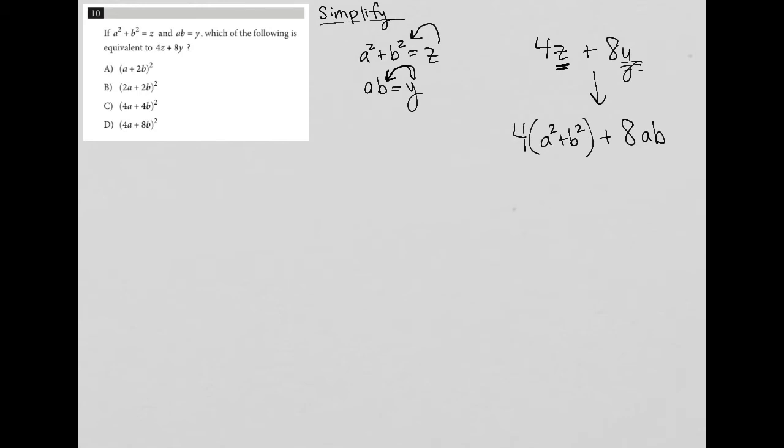Now I'm going to simplify this. Looks like none of my answer choices look like this. So I'm going to distribute this 4 across here to see if that's helpful. So I have 4a² + 4b² + 8ab.